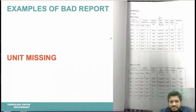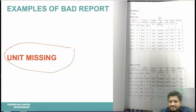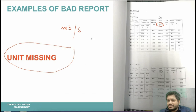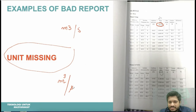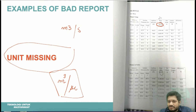Fourth, unit errors: make sure units are written correctly. For example, writing 'meter three per second' is wrong — it should be 'meter cube per second.' Units in tables should be placed inside brackets.